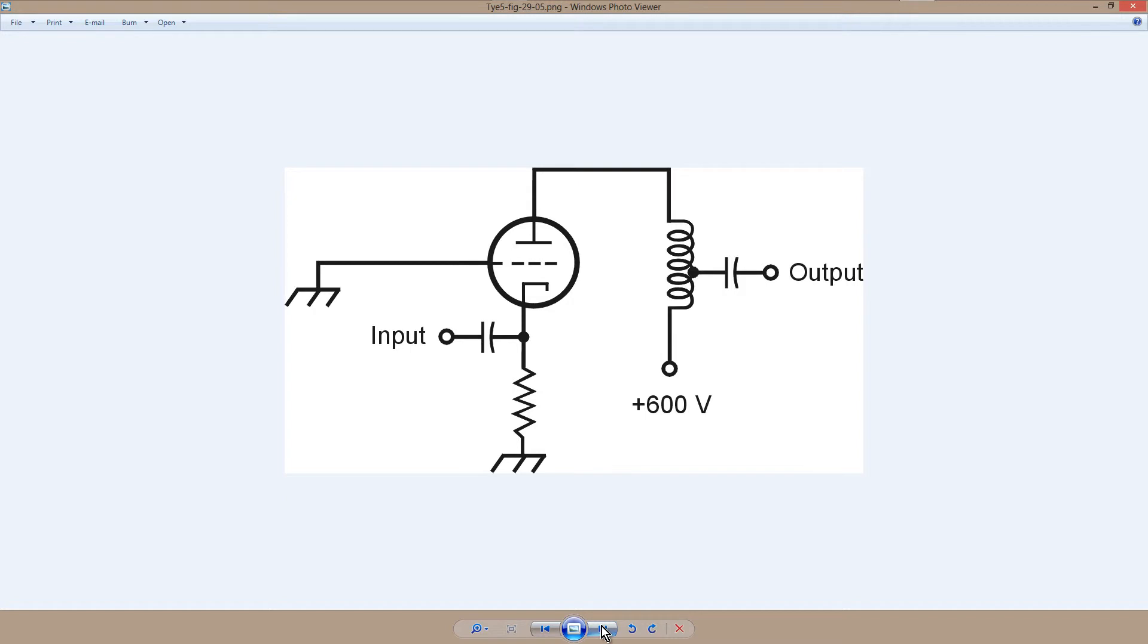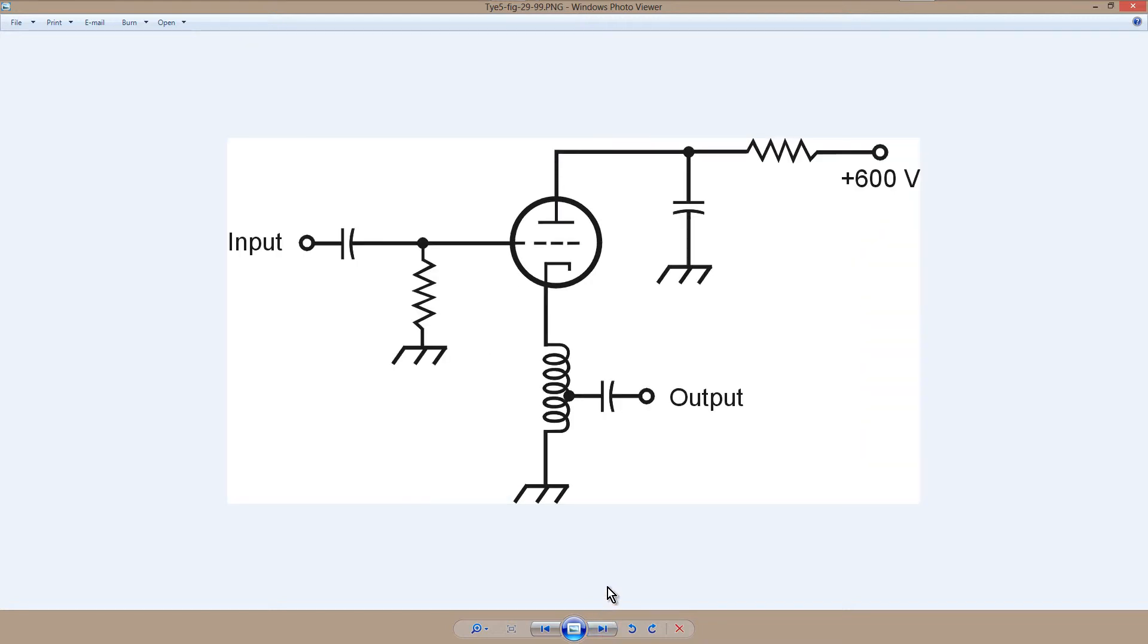Now I did not include a grounded plate or cathode follower in Teach Yourself Electricity and Electronics, but I will show that circuit to you here. This is the analog of the grounded drain field effect transistor circuit or the grounded collector bipolar transistor circuit, also known as emitter follower, source follower. This is sometimes also called a cathode follower.